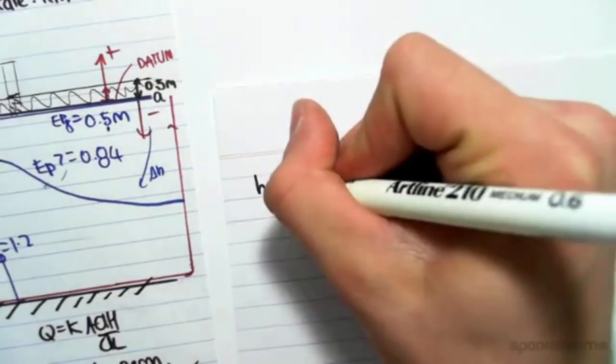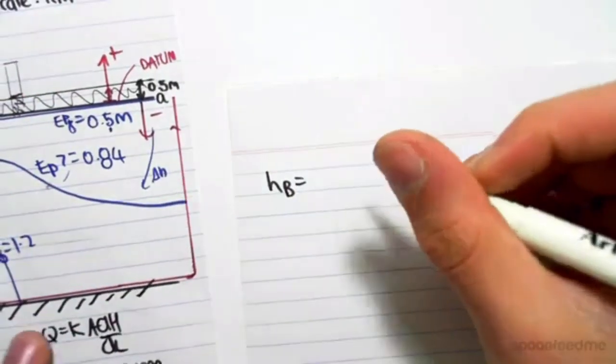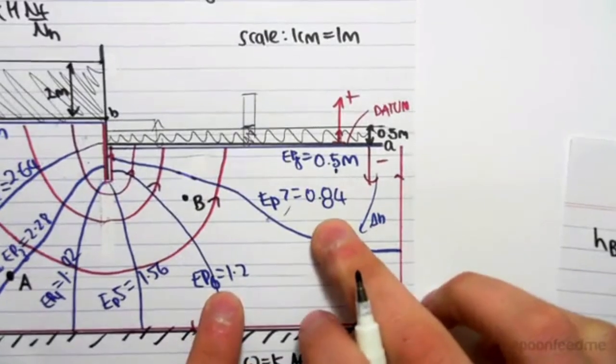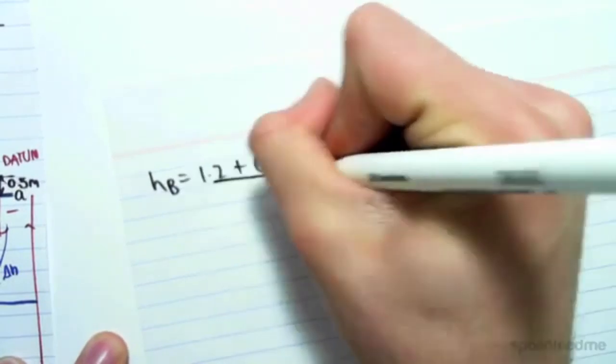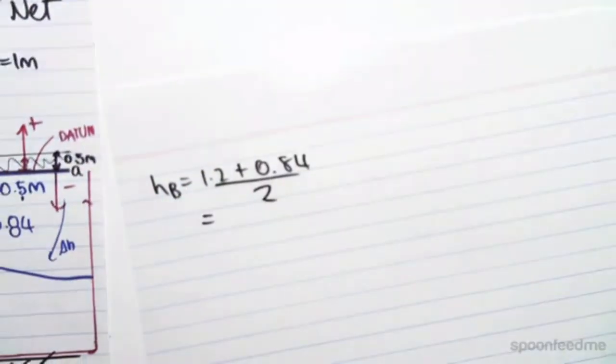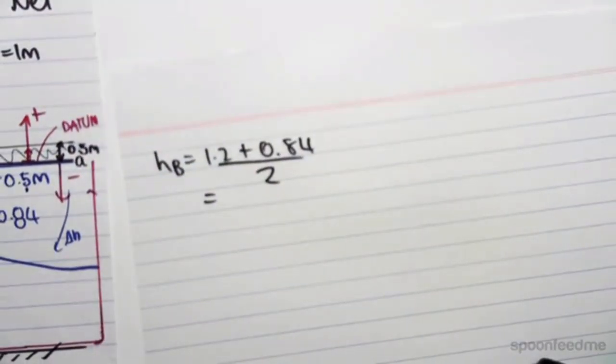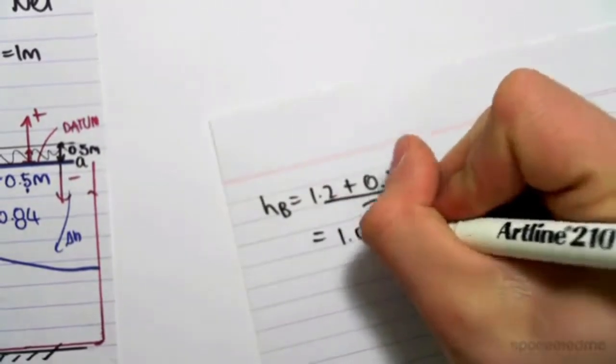So the head at B would equal, it's 1.2 and 0.84. So 1.2 plus 0.84, we're going to take the average of that, and we get 1.02 meters.